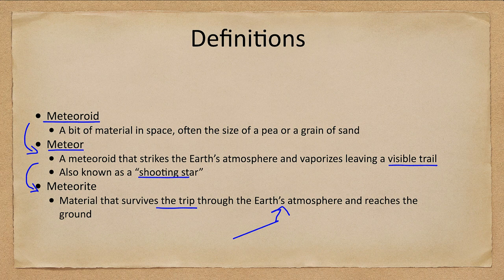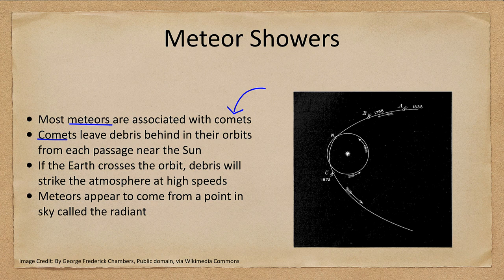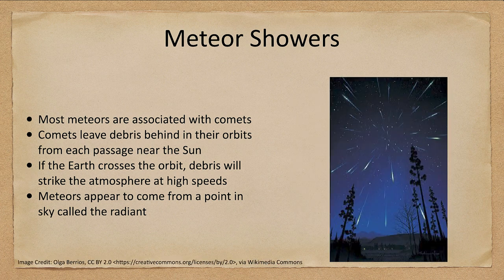Meteors often occur in meteor showers, and most meteor showers are associated with comets. Comets leave debris behind in their orbits — material vaporized from their surfaces that continues to follow the same orbital path. When the Earth crosses that orbit at certain points, it picks up that debris, and that's where we get meteors.